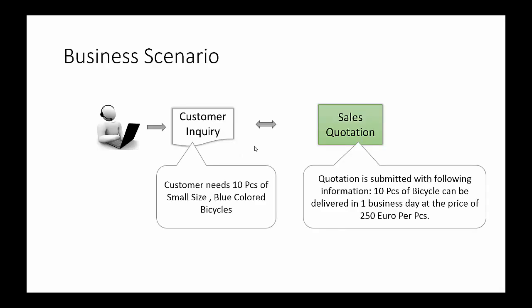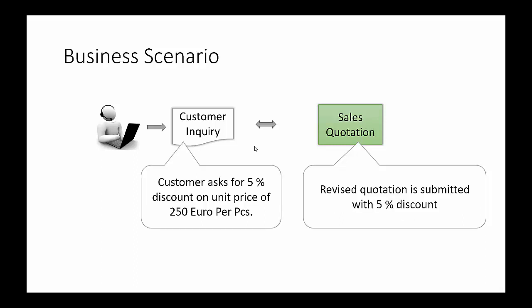Let us look at the business scenario. RS Bicycle Trading Company has received a customer inquiry for delivering 10 pieces of small size blue colored bicycles. In response to the customer inquiry, we will submit a quotation to deliver 10 pieces of bicycle at €250 per piece, with one business day for delivery. After receiving the quotation, the customer asks for a 5% discount on the unit price. RS Bicycle Trading Company will send a revised quotation offering that 5% discount.